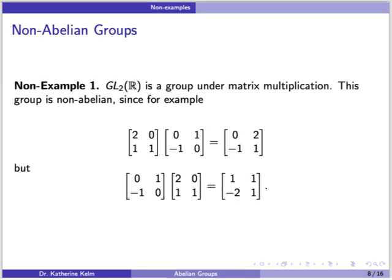Now let's talk about some non-examples. GL_2(R), the group of 2 by 2 invertible matrices with real entries, is a group under matrix multiplication, and this group is non-abelian. For example, if you multiply the matrices [2, 0; 1, 1] and [0, 1; -1, 0] in that order, you get [0, 2; -1, 1]. But if you switch the order, you get a different matrix, [1, 1; -2, 1]. Therefore, these matrices do not commute.